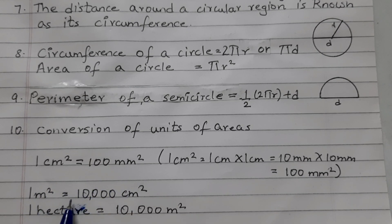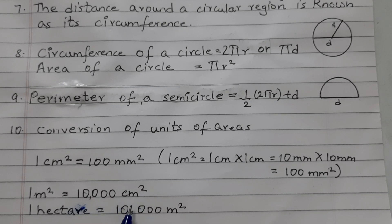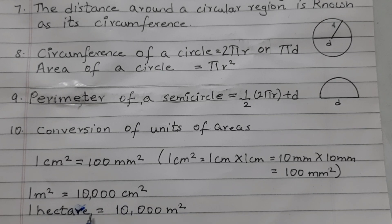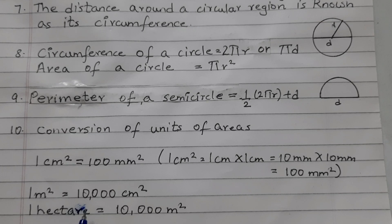1 squared meter is equal to 10,000 square centimeter. You can derive this the same way. 1 squared meter is 1 meter into 1 meter. And then you can convert it into centimeter and you can get this answer. 1 hectare, that is also a unit of area, is equal to 10,000 square meter.